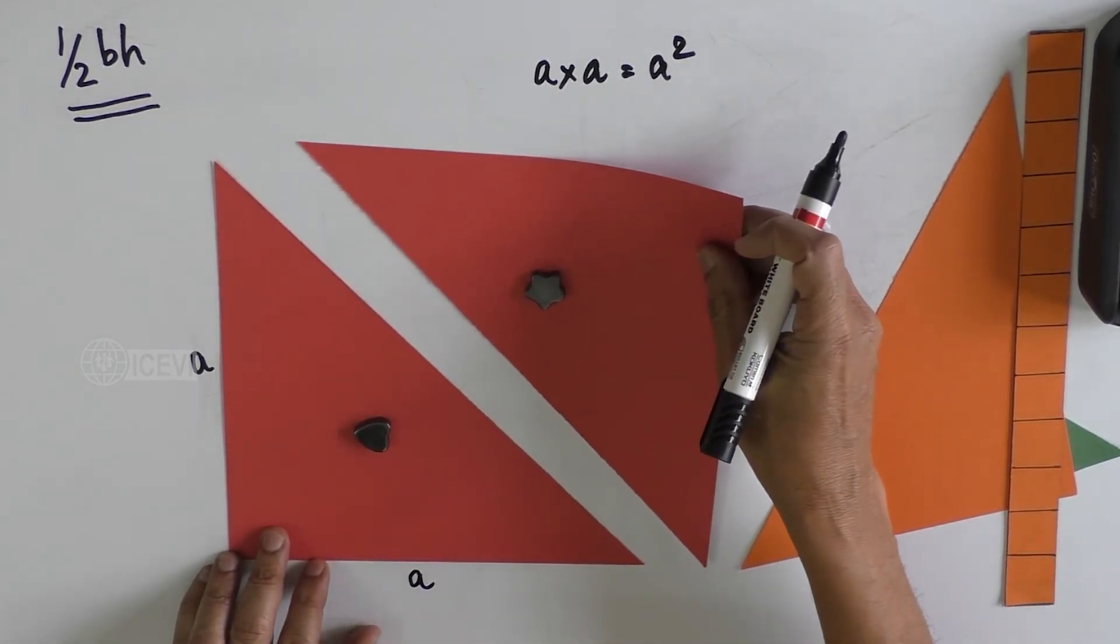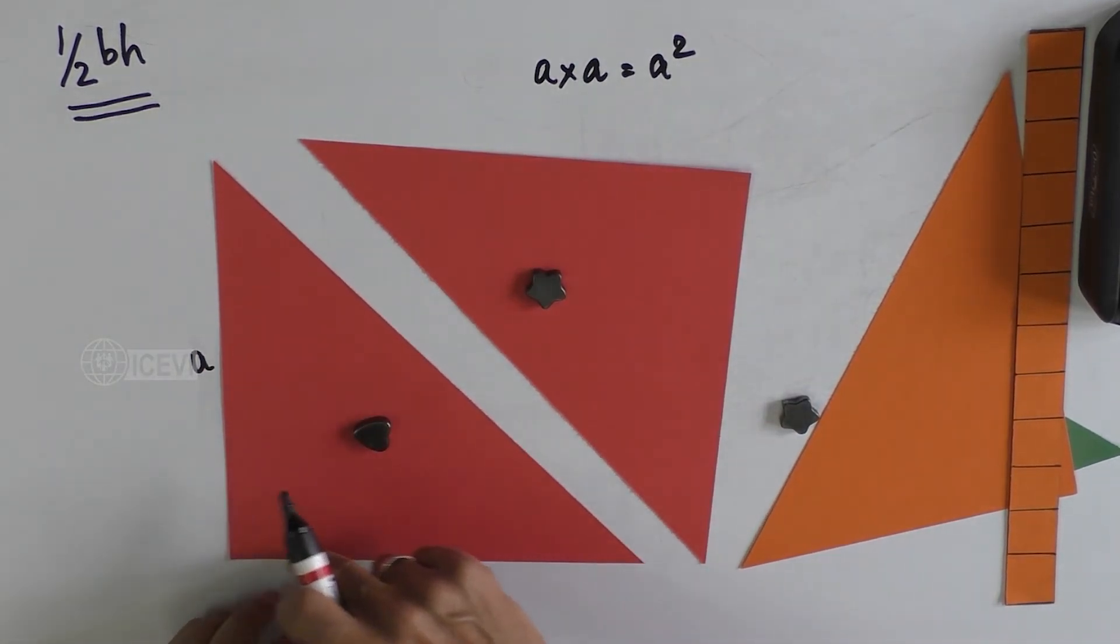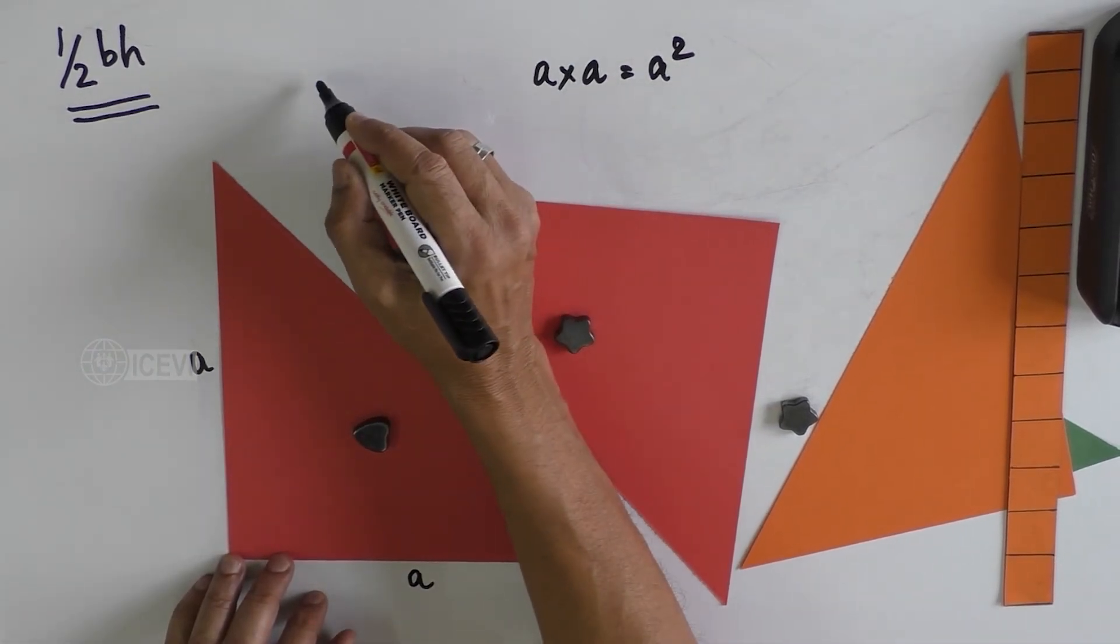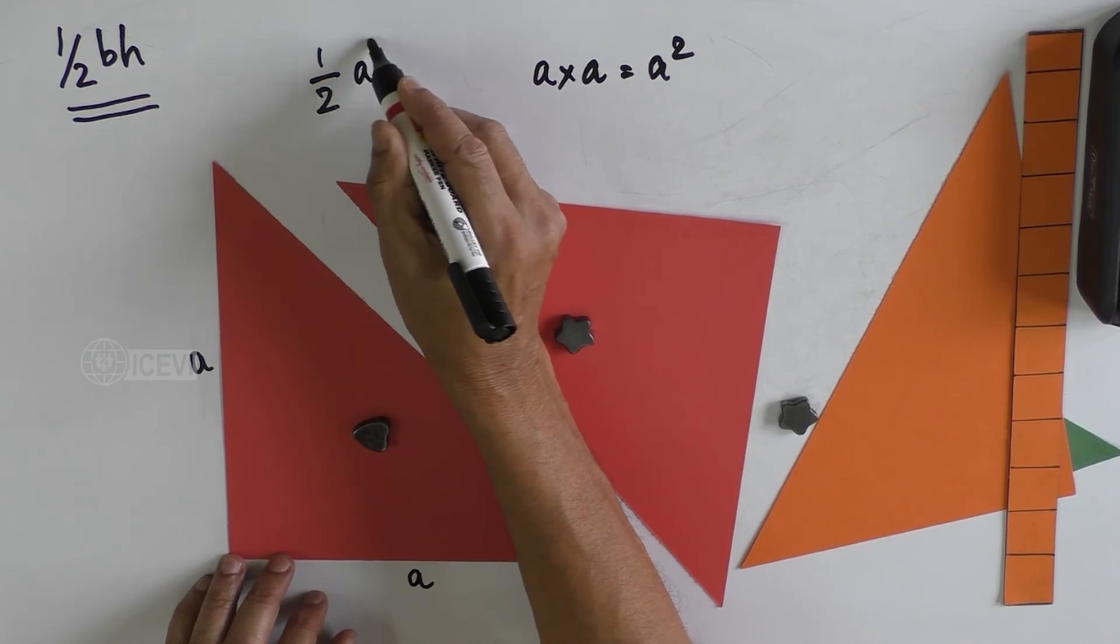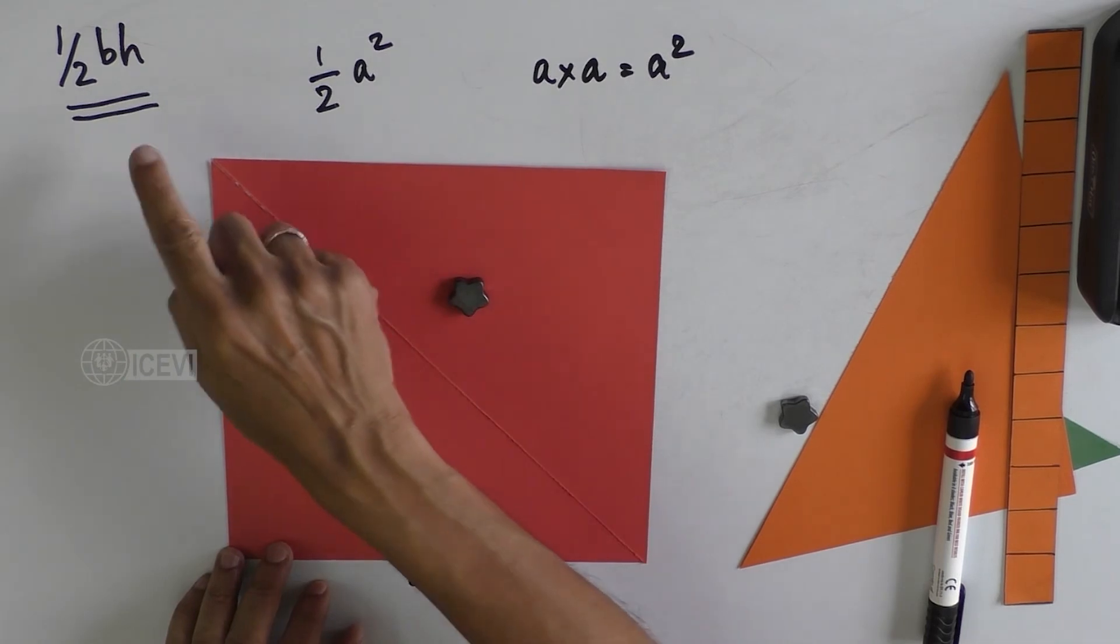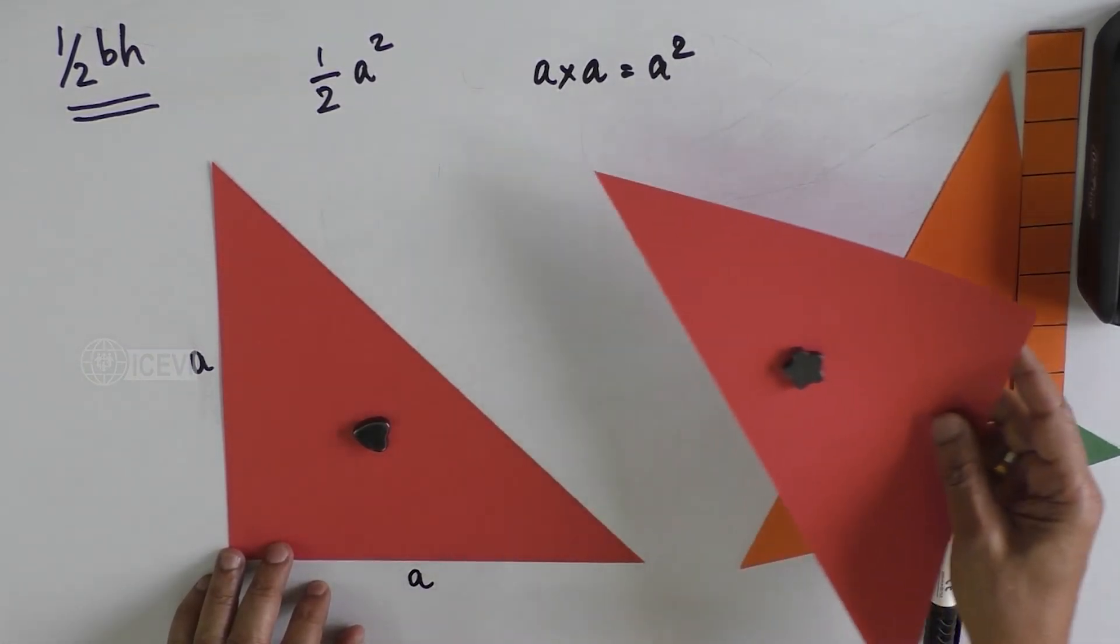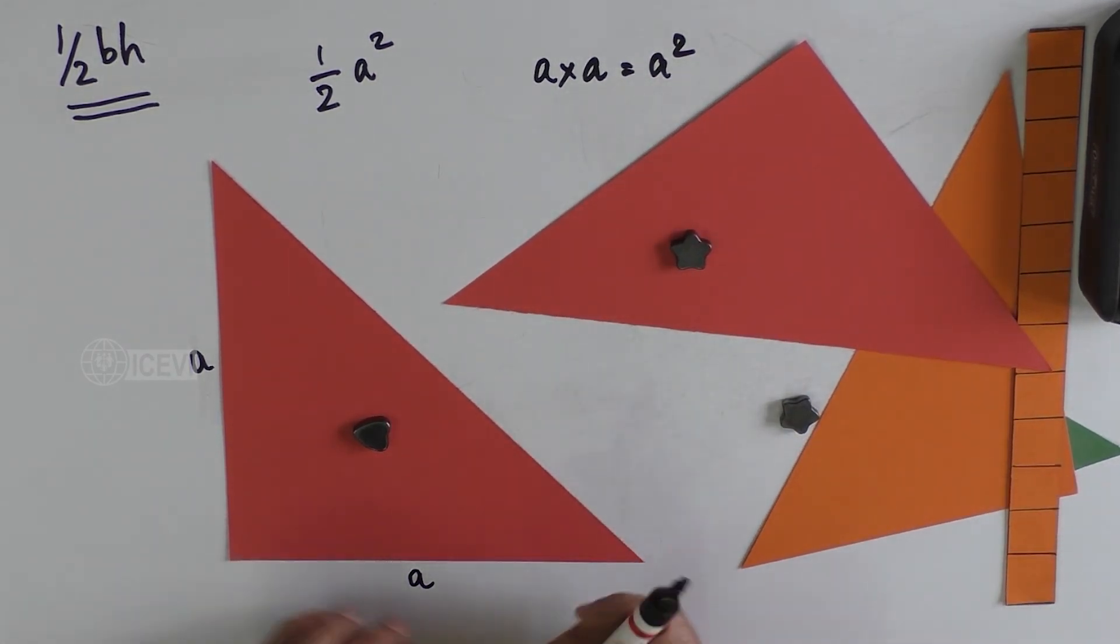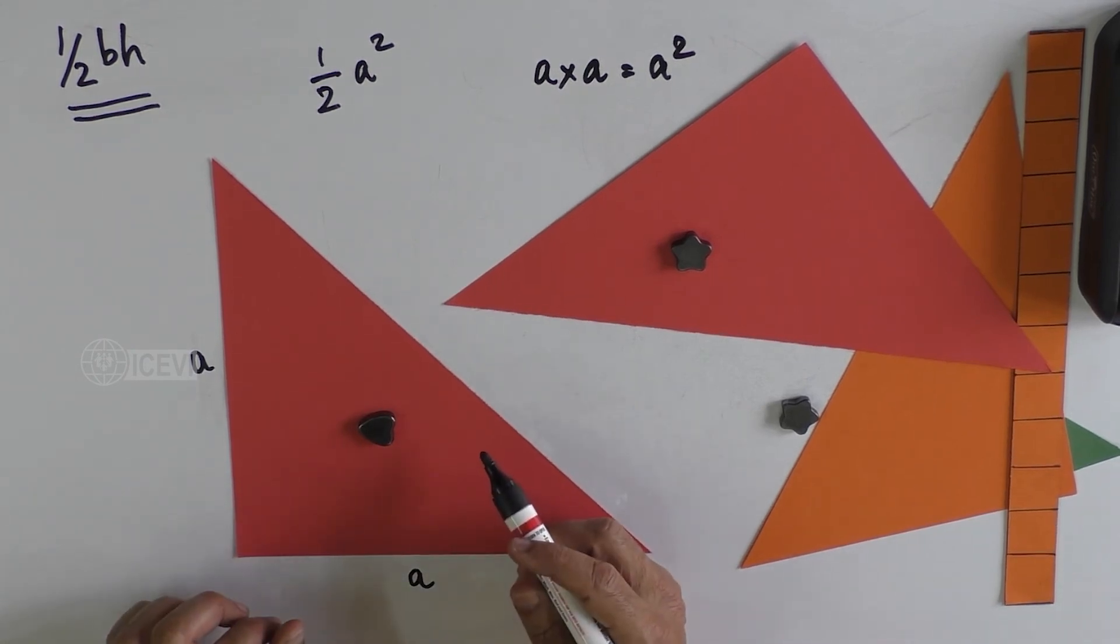In the case of a right angle triangle where the two sides are equal, we call that isosceles triangle. In that case, the area is nothing but half A square. A square is the area of the square. This is how we get the formula half BH. This example will definitely help the child to understand how the area of a right angle triangle is calculated.